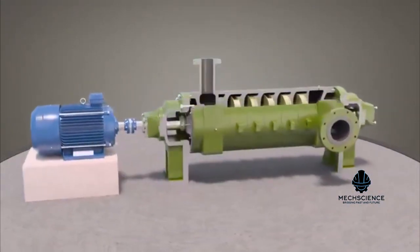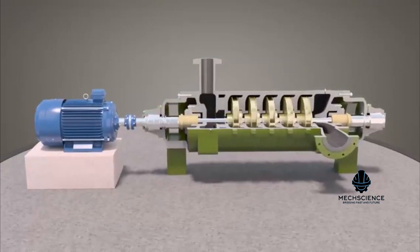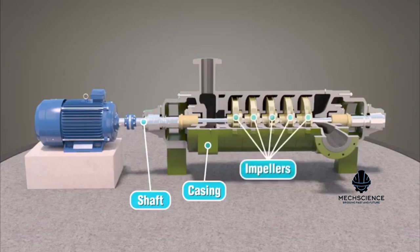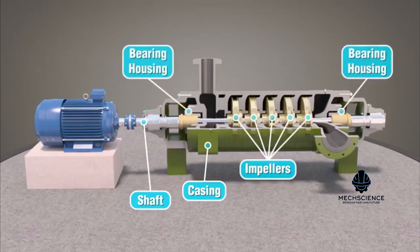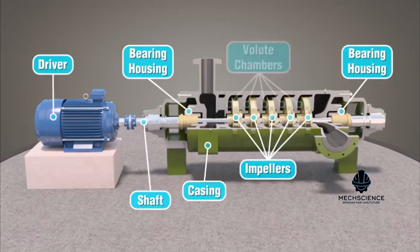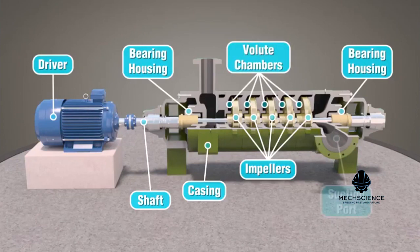The main components of a multistage centrifugal pump consist of the following: the casing, shaft, impellers, bearing housing, driver, volute chambers, suction port, and discharge port.